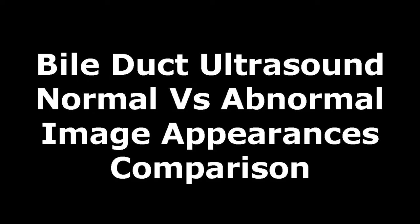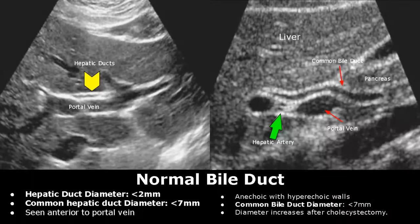Hello everyone, this is Dr. Sam and today we will study bile duct ultrasound. The main bile ducts that we will see are the hepatic ducts or intrahepatic bile ducts and the common bile duct. Here we can see the hepatic duct — it is anterior to the portal vein and is anechoic with hyperechoic walls.